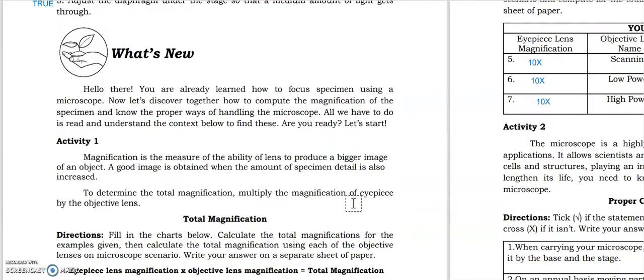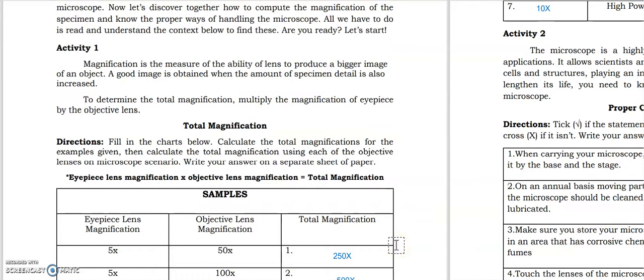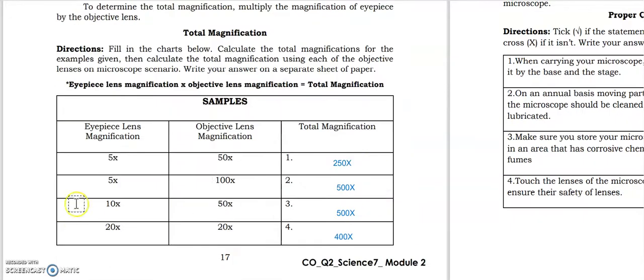Okay, just pause the video. Then yeah, the total magnification. So magnification is the measure of the ability of a lens to produce a bigger image of an object. So how to calculate the total magnification? All you have to do is to multiply the eyepiece lens and the objective lens, and you have the total magnification.